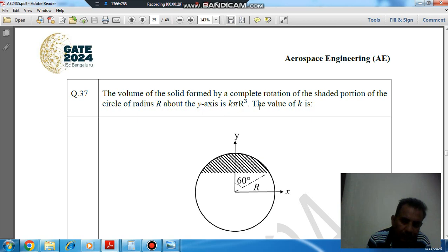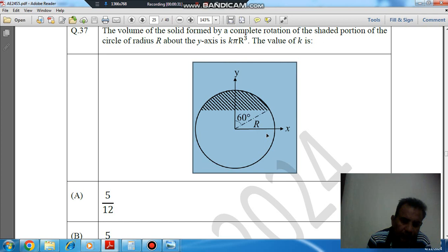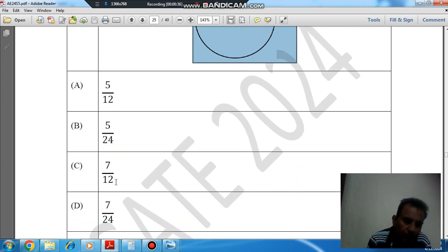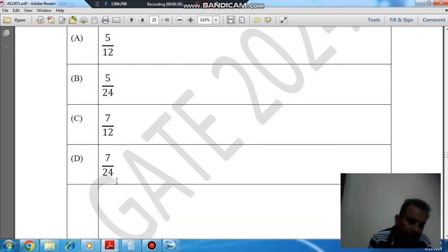Option A: 5/12, option B: 5/24, option C: 7/12, option D: 7/24.